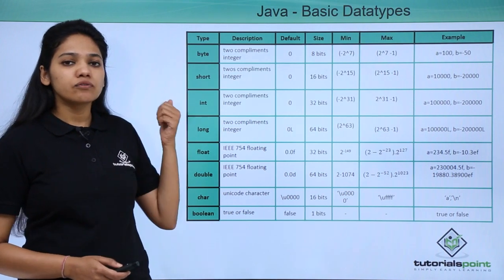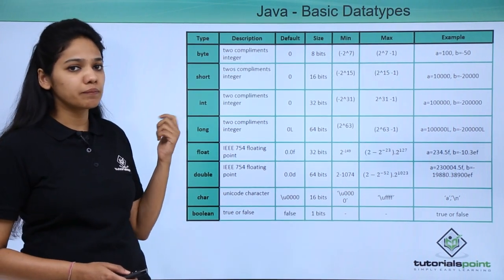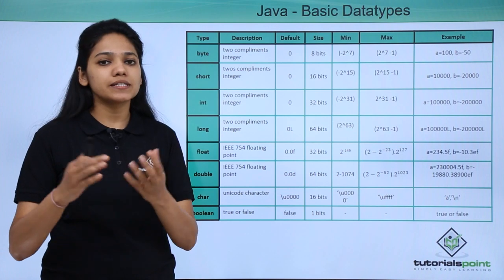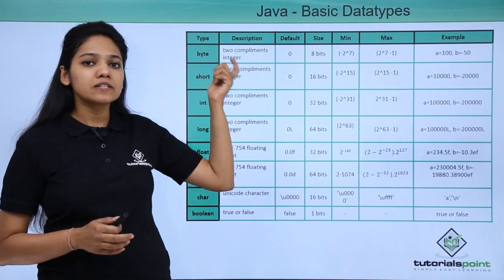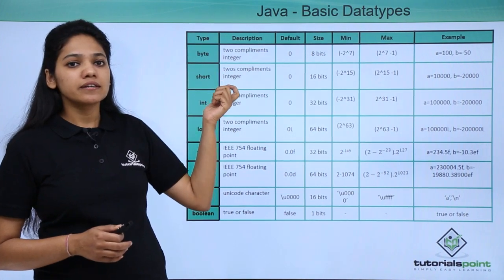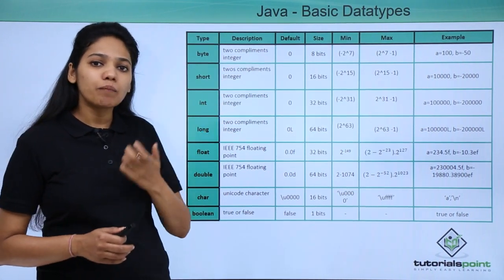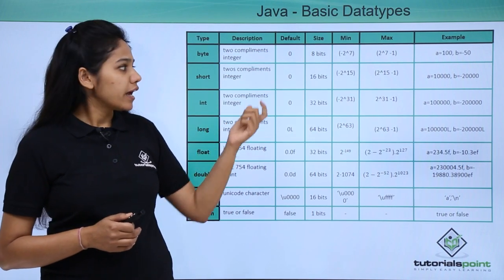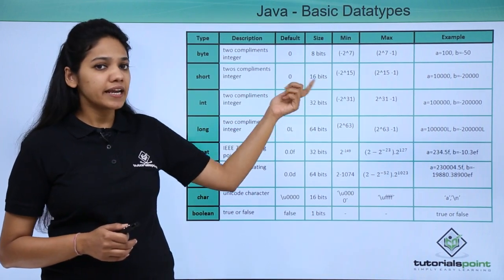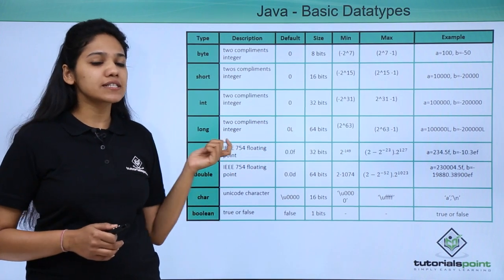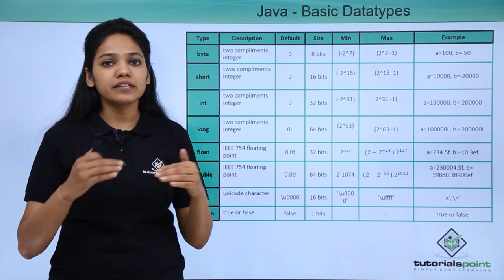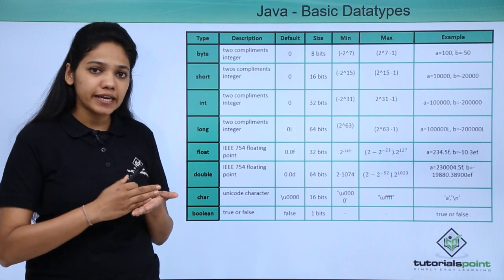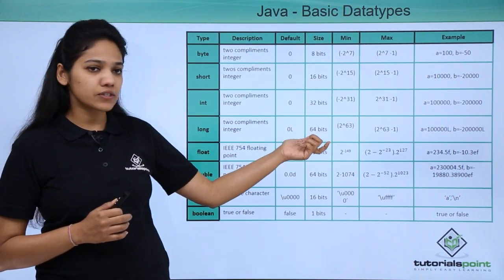In this chart, as you can see, byte and short are two's complement integers. They are used mainly to save memory space in arrays. Byte is four times shorter than int, and short is two times shorter than int. Int is the default integer value — if you have to store any numerical value, int is the default type. You can see the sizes: 8, 16, 32 bits, and then 64 bits is long, which is used when the value is larger than what can be stored in int.